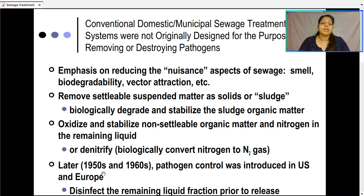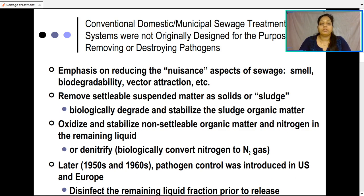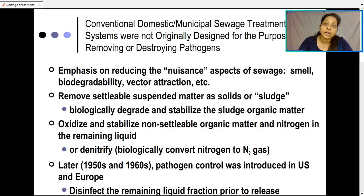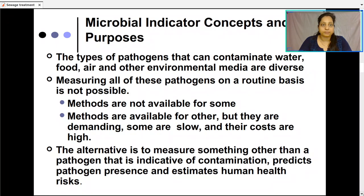Later in the 1950s and 1960s, pathogen control was also addressed. In the U.S. and Europe, systems were developed to disinfect the remaining liquid fraction so that microorganisms are also reduced. So in the sewage system, settleable solids settle as sludge, nitrogen is biologically converted into nitrogen gas, and nowadays pathogenic microorganisms are also being controlled.